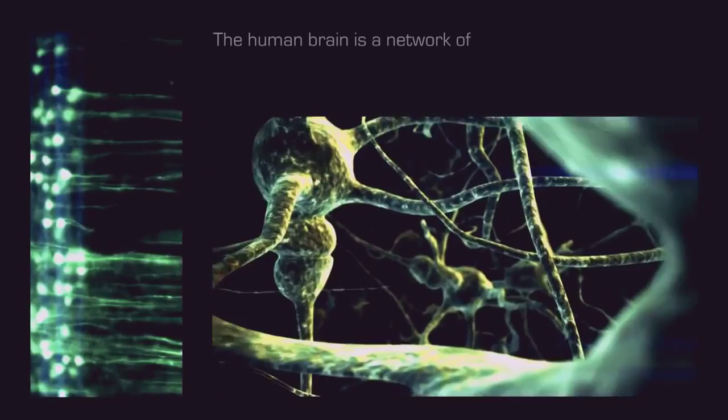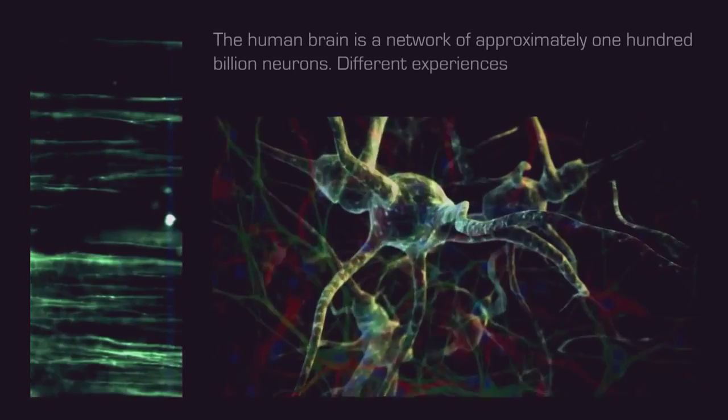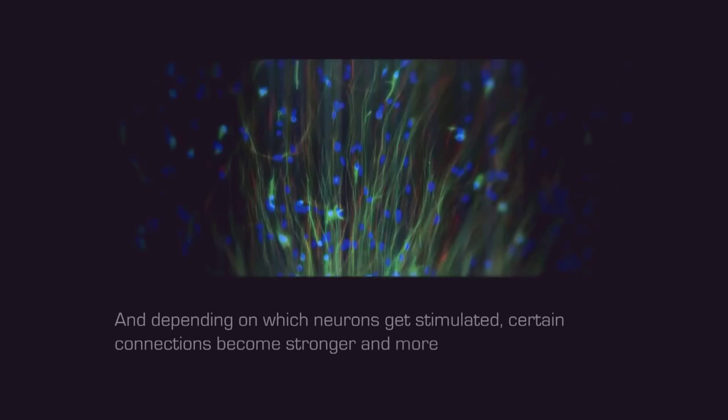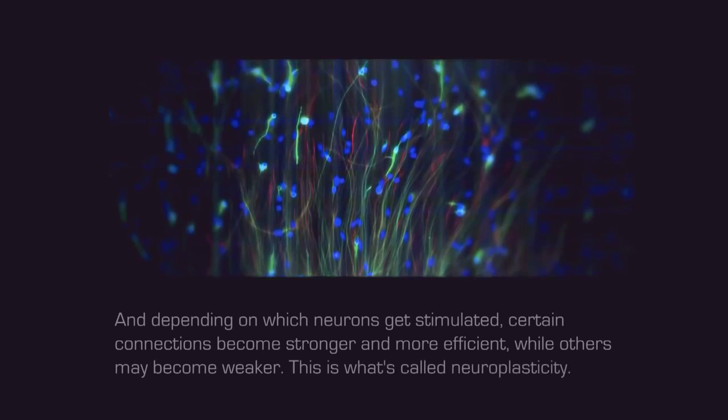The human brain is a network of approximately 100 billion neurons. Different experiences create different neural connections which bring about different emotions. Depending on which neurons get stimulated, certain connections become stronger and more efficient, while others may become weaker. This is what's called neuroplasticity.